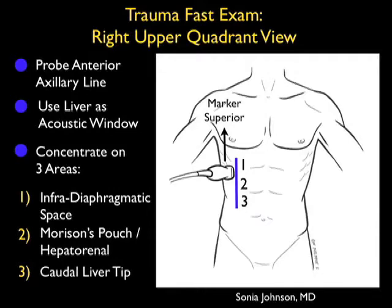Our first view from this right upper quadrant area will be position one in the infradiaphragmatic space, just below the diaphragm and above the liver. Second, we'll move the probe slightly inferiorly to look into the traditional Morrison's pouch, or hepatorenal interface. The last view is the caudal tip of the liver, shown here in position three. It's very important to look at the caudal tip of the liver, as this represents the beginning of the right pericolic gutter, and small amounts of fluid will pool here before moving into Morrison's pouch.